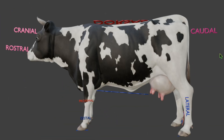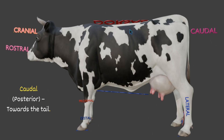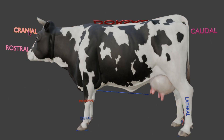Cranial, or anterior, means towards the head — you can see this is the head of the animal. Likewise, caudal or posterior means towards the tail — you can see this is the tail of the animal. So cranial means anterior, towards the head, and caudal means posterior, towards the tail.